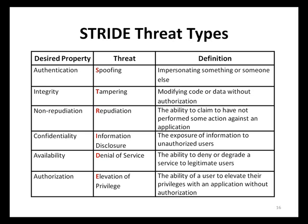Applications need to be available to legitimate users, especially in the case of e-commerce applications. The desired property is therefore availability. The threat that negatively affects availability is the Denial of Service threat, which enables malicious users to deny or degrade a service to legitimate users. Finally, the last threat in STRIDE is Elevation of Privilege, created whenever a malicious user is able to transition from one privilege level to another without proper authorization. For example, an anonymous internet user who compromises an application running as system is an elevation of privilege threat. The desired application property affected is authorization.